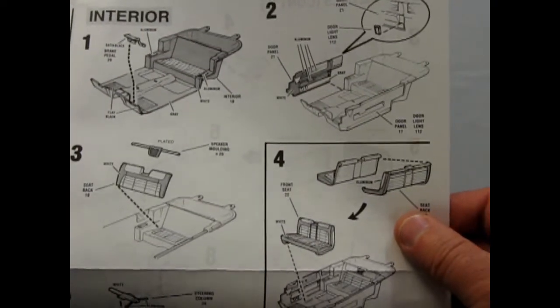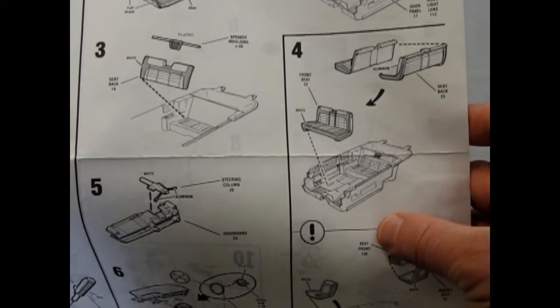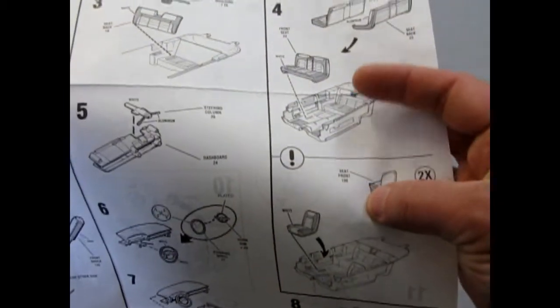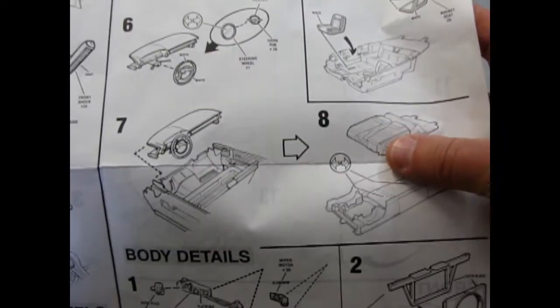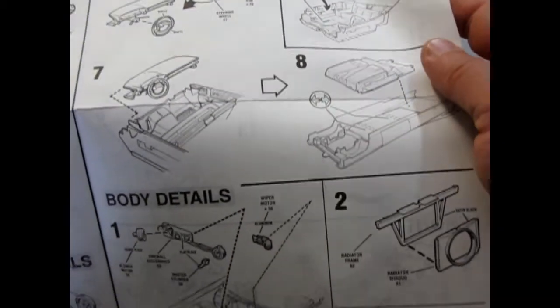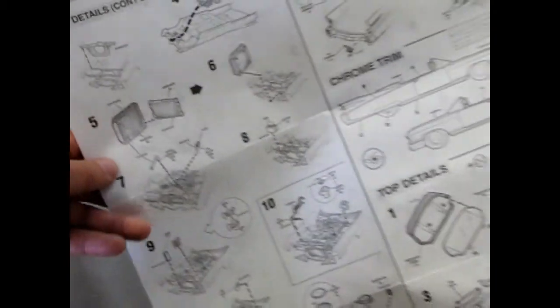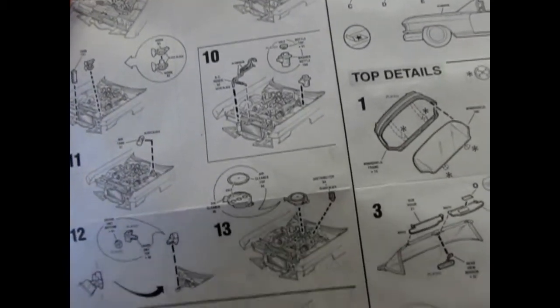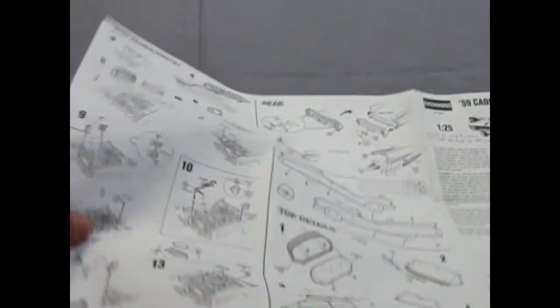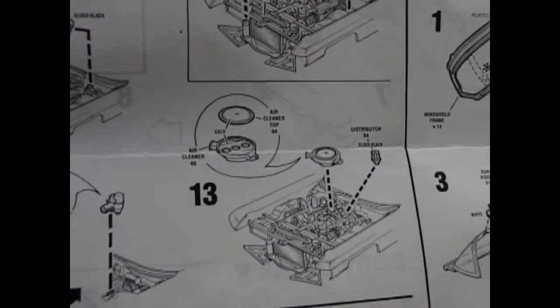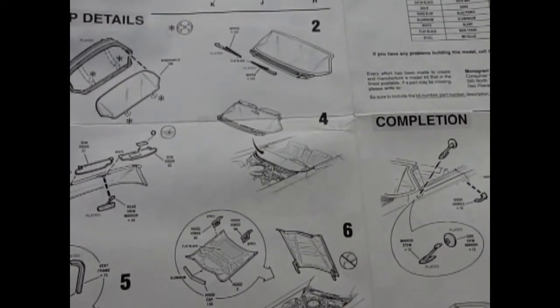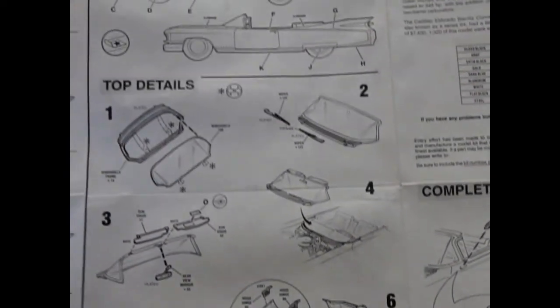The interior has some separate door panels molded in. Separate plated speaker moldings for your seat. Multi-piece seats. Multi-piece instrument panels. A whole bunch of cool stuff. A whole bunch of body details there. And it keeps going on. Two-piece radiators. Oh there's the clear washer bottles and bottle top. Two-piece air cleaner.